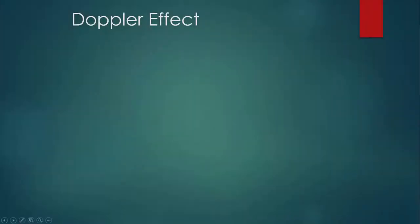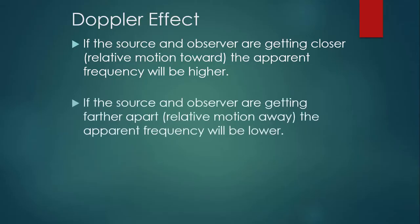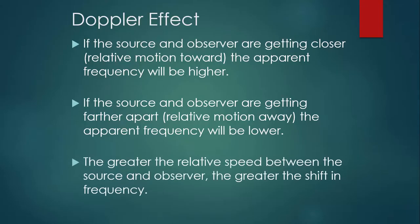It's important to note that the frequency of the source has not changed in any of these examples. But the apparent frequency, the observed frequency, from Observer 1 or Observer 2, changes based on the relative motion between the source of the waves and that observer. If the source of the sound and the Observer are getting closer, that is, they have relative motion toward each other, then the apparent frequency of the wave will be higher. And it doesn't matter which one's moving, as long as they're getting closer together. If the source of the sound and the Observer are getting farther apart, that is, they have relative motion away from each other, then the apparent frequency is going to be lower than the frequency that's actually being emitted. Finally, the greater the relative speed between the source and the Observer, the greater the shift in frequency.